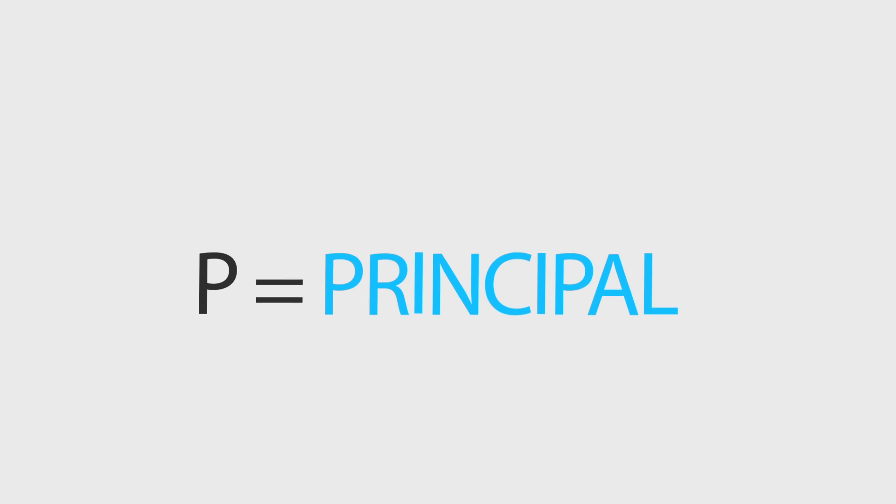The P is the principal, it's the amount borrowed. The rate R is the percent of interest and the time T is calculated by how long you have to pay the loan off.